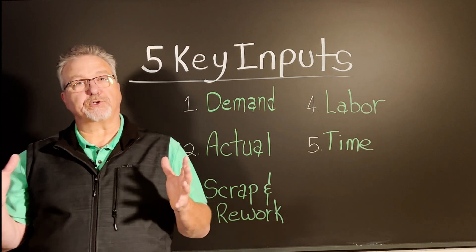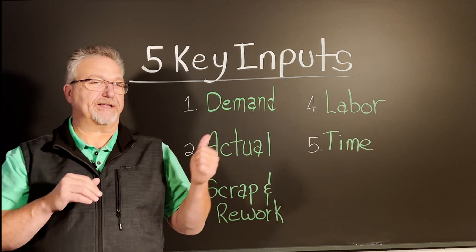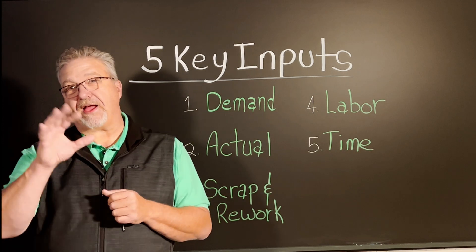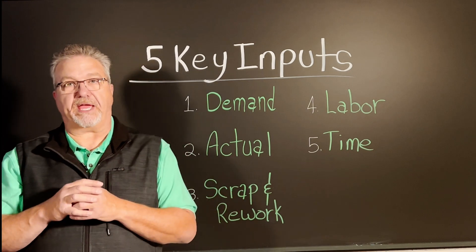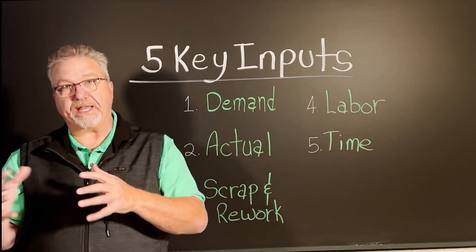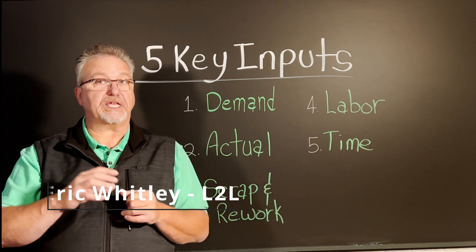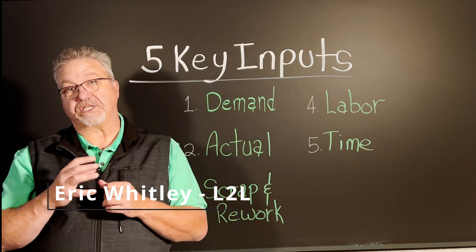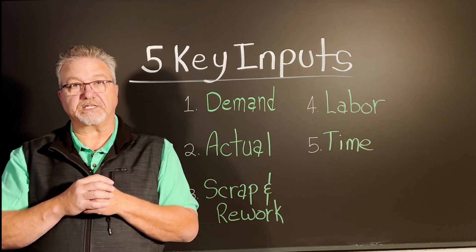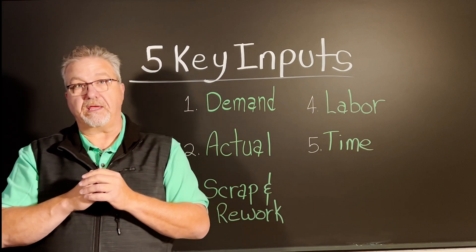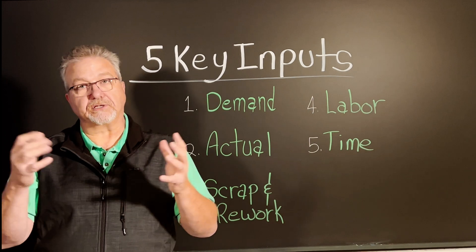Product demand, actual throughput, scrap and rework, labor and time — these five inputs make up almost all the necessary factors in almost every calculation of manufacturing metrics within industry today. In one combination or another, using these inputs in various calculations will result in tracking metrics such as overall equipment effectiveness, performance efficiency, parts per labor hour, and operational availability. And the list goes on.